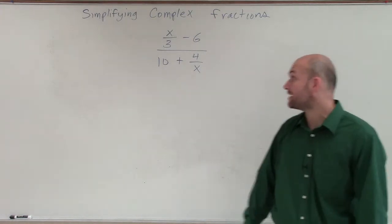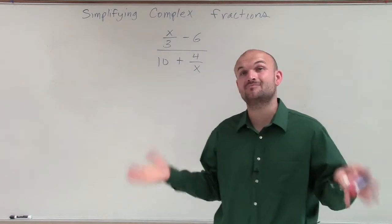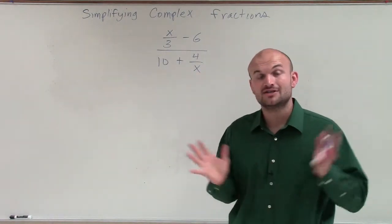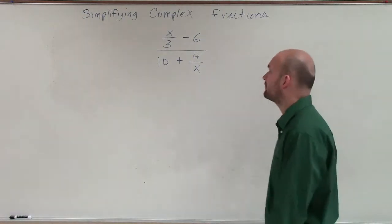So we have a complex fraction on our hand, and what we need to do is simplify this. Now, a couple ways that I talked about simplifying is that we can combine the numerator and the denominator so we can get them to fractions, and then we can just multiply by the reciprocal like we've done before.